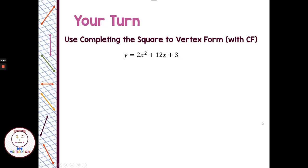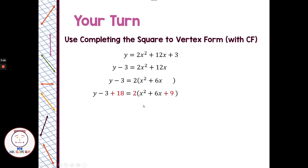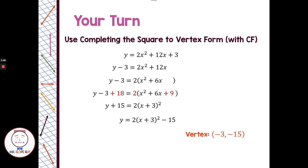I think you guys are ready to try one of those on your own. Pause the video here, come back, and see how you did. So on this one, we want to start with subtracting 3 from each side. The common factor we're going to pull out is 2, before we complete the square. I'm left with x squared plus 6x. Half of 6 is 3, 3 squared is 9. By adding a 9 on that side, I have 2 times 9 is 18, so I'm adding 18 to the right side and need to add 18 on the left side. Negative 3 plus 18 is 15, and then I can complete the square: x plus 3 quantity squared. My last step is to subtract 15 from each side, and I'm in vertex form. The vertex would be negative 3, negative 15.